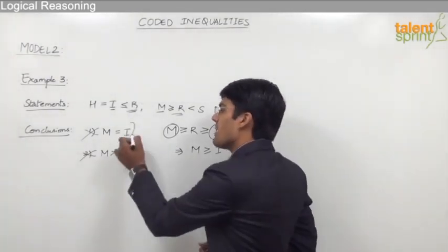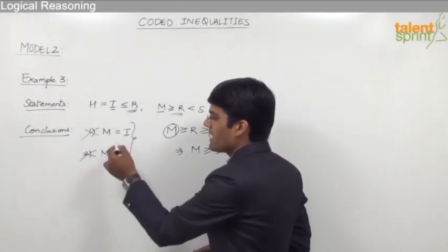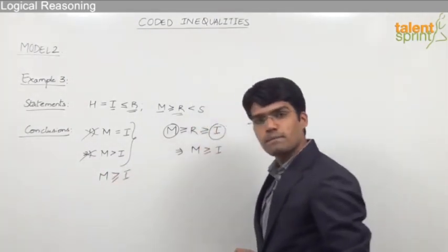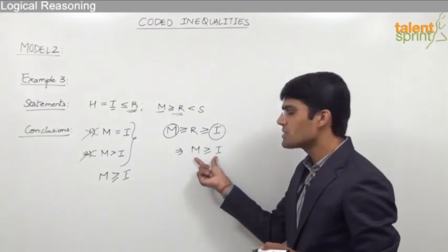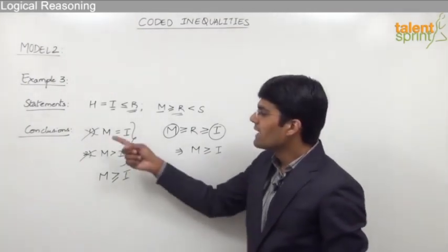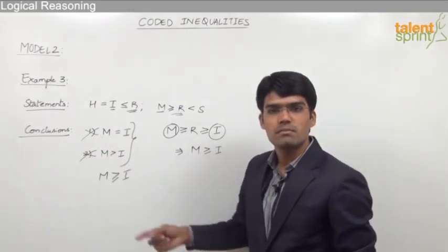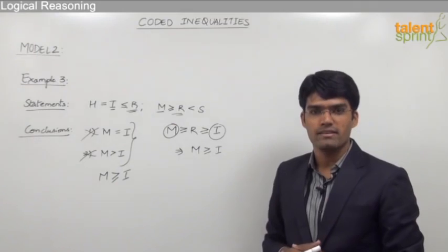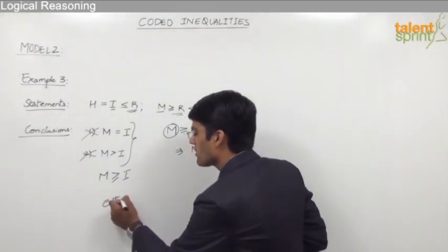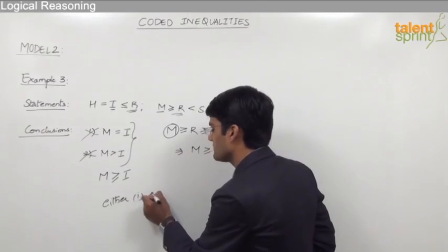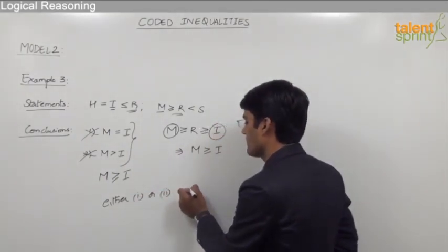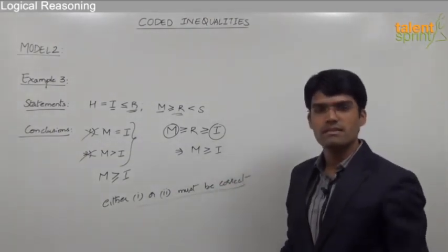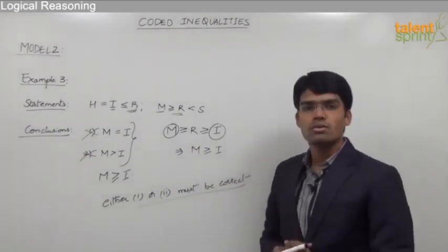However, if we combine the two conclusions — m = i from conclusion 1 and m > i from conclusion 2 — together they express m ≥ i, which is the correct relationship. So while conclusions 1 and 2 are individually false, their combination is correct. Therefore, the answer is either conclusion 1 or conclusion 2 is true.